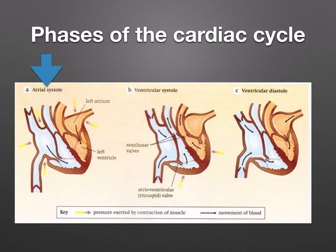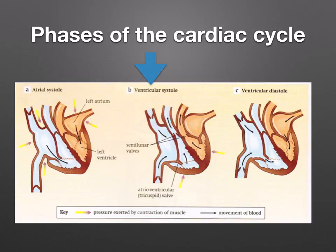A quick overview of what's going on. In atrial systole — think systole as 'squeeze' — the atria are squeezing the blood out into the ventricles, so they are contracting, and the ventricles are relaxed. In ventricular systole, the ventricles are contracting and pushing the blood out into the arteries. Finally, ventricular diastole is when both the atria and ventricles are relaxed — think diastole as 'dilated', so they're filling up with blood.